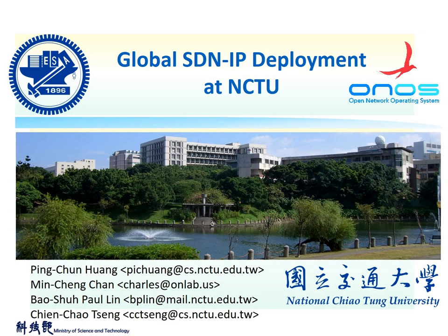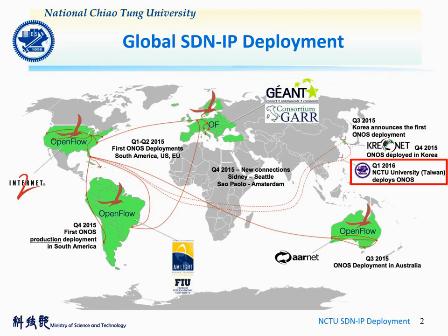The keynote session will cover the details of the NCTU team deploying the SDNIP project. From the SDNIP global deployment graph provided by ONLAB, we can see that NCTU Taiwan finished the deployment in 2016 Q1, along with previous deployments from international SDN research teams Internet2, AMLite, Rnet, and Jint. And now, we are the newest site in the project.